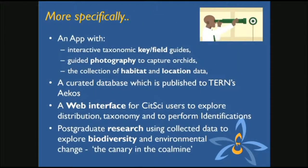What are we going to actually do inside that project? Our app will be doing three things. First is a keyed taxonomic description mechanism — this is pretty common in ecology. Then we'll have some guided photography, basically guiding people about taking photos of leaves and side shots to get decent pictures of these orchids. There's also associated habitat information we'll be collecting and GPS data about where the sightings are being taken. Connected with that, there's a database which will have all the information collected, curated and connected to TURN's ECOS information system.